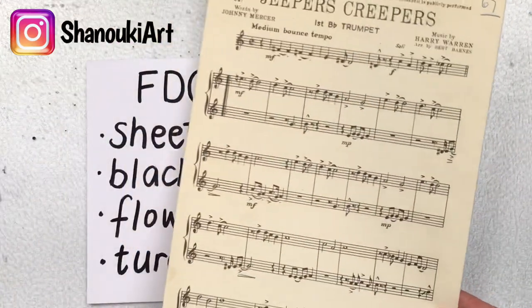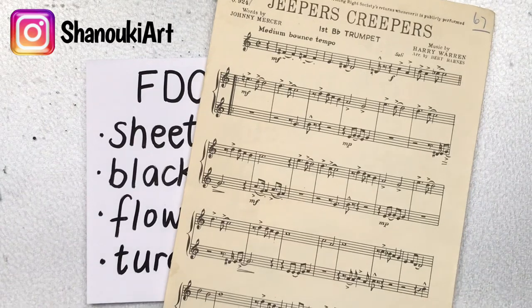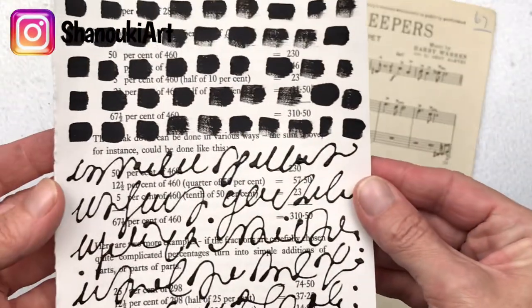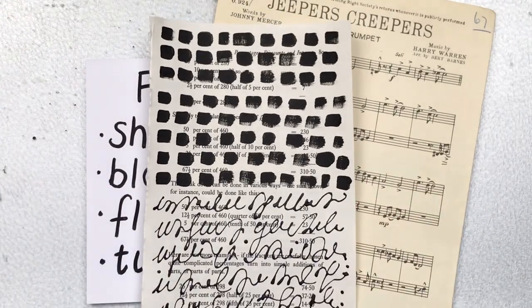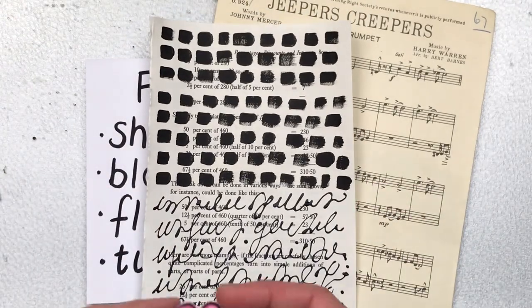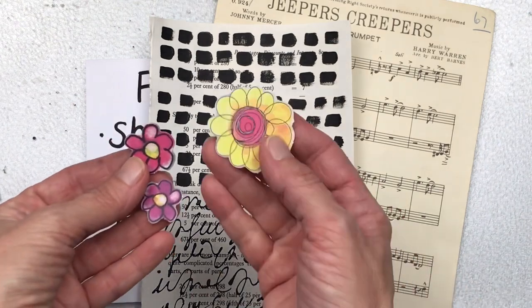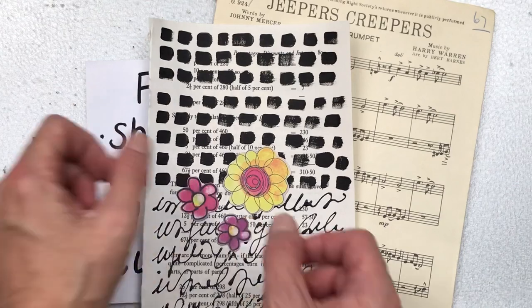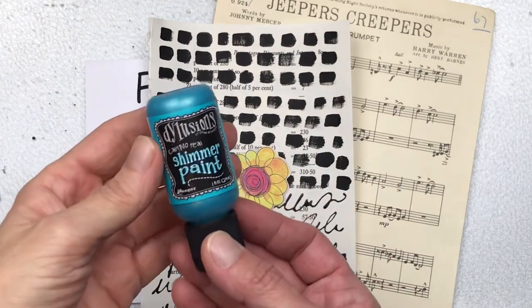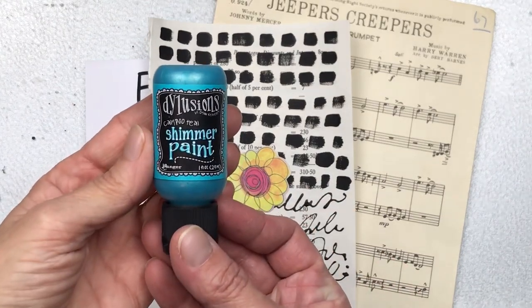I have some vintage sheet music. If you don't have this, you can just print something off the internet. This is my black mark making and I'll show you exactly how to make this. My flowers are die cuts from the Essentials by Marlene die cut book. I'll put a link in the description below. The color turquoise I'm using is a shimmer paint by Dylusions.